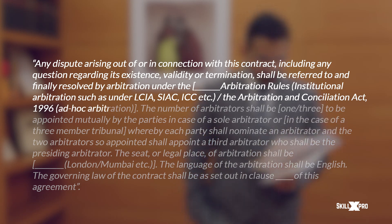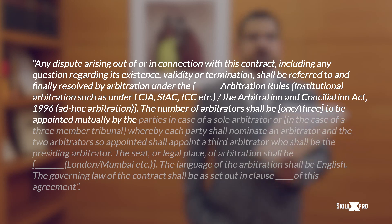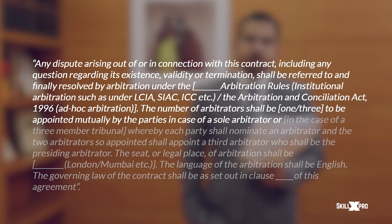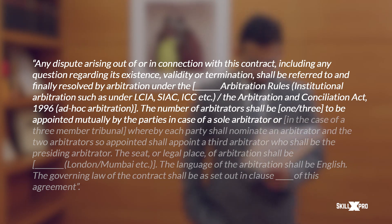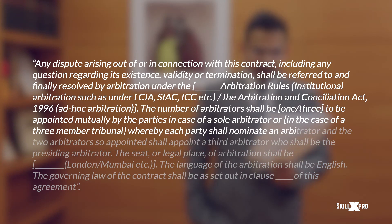Moving on to the other important facet: the number of arbitrators shall be either a sole arbitrator or, in many cases, three arbitrators — as I said in the beginning, it has to be an uneven number — to be appointed mutually by the parties in case of a sole arbitrator, or in case of a three-member tribunal, whereby each party shall nominate an arbitrator and the two arbitrators so appointed shall appoint a third arbitrator, who shall be the presiding arbitrator.